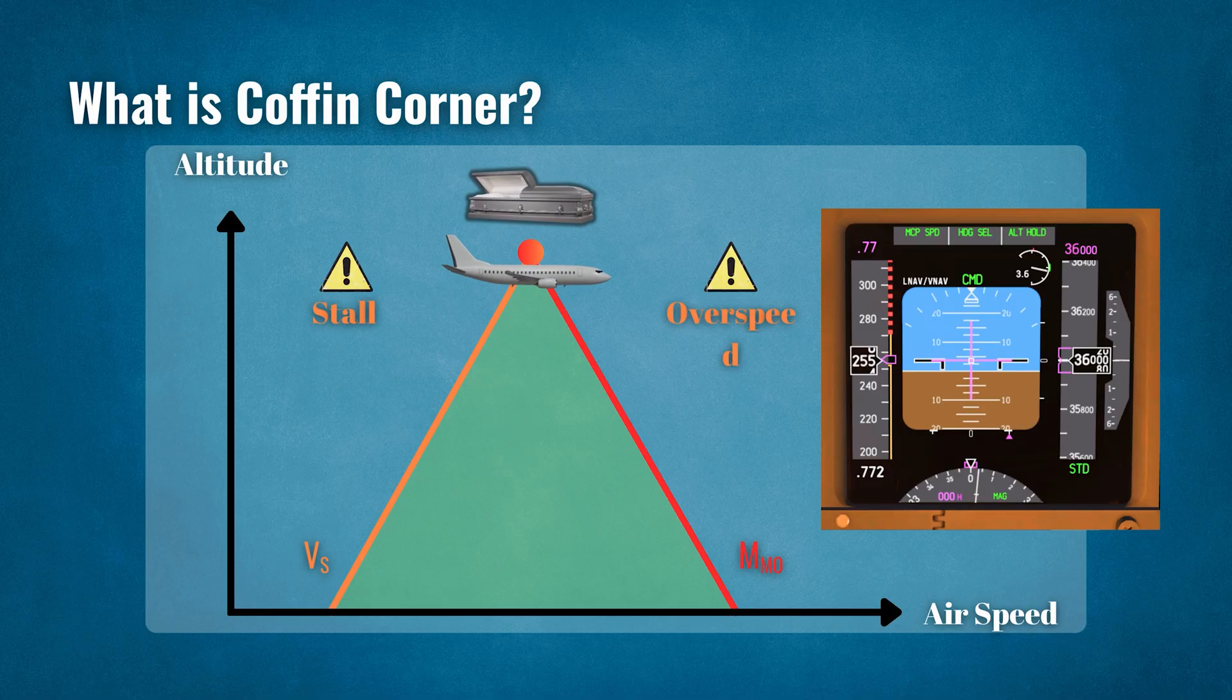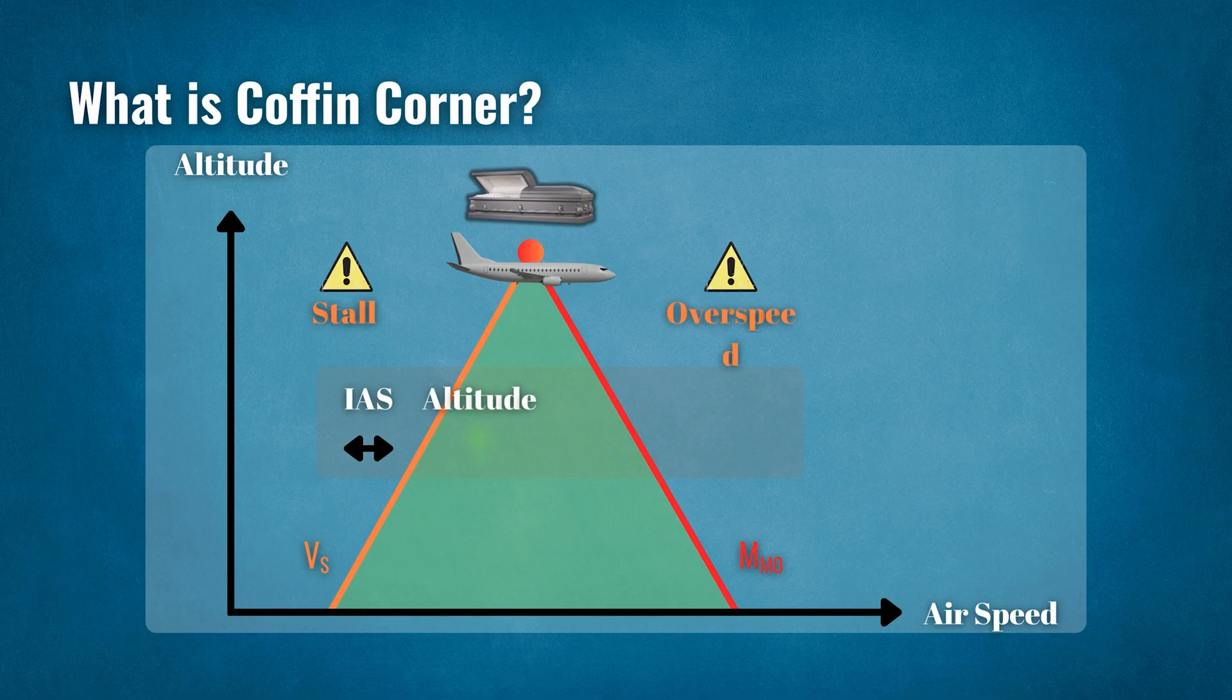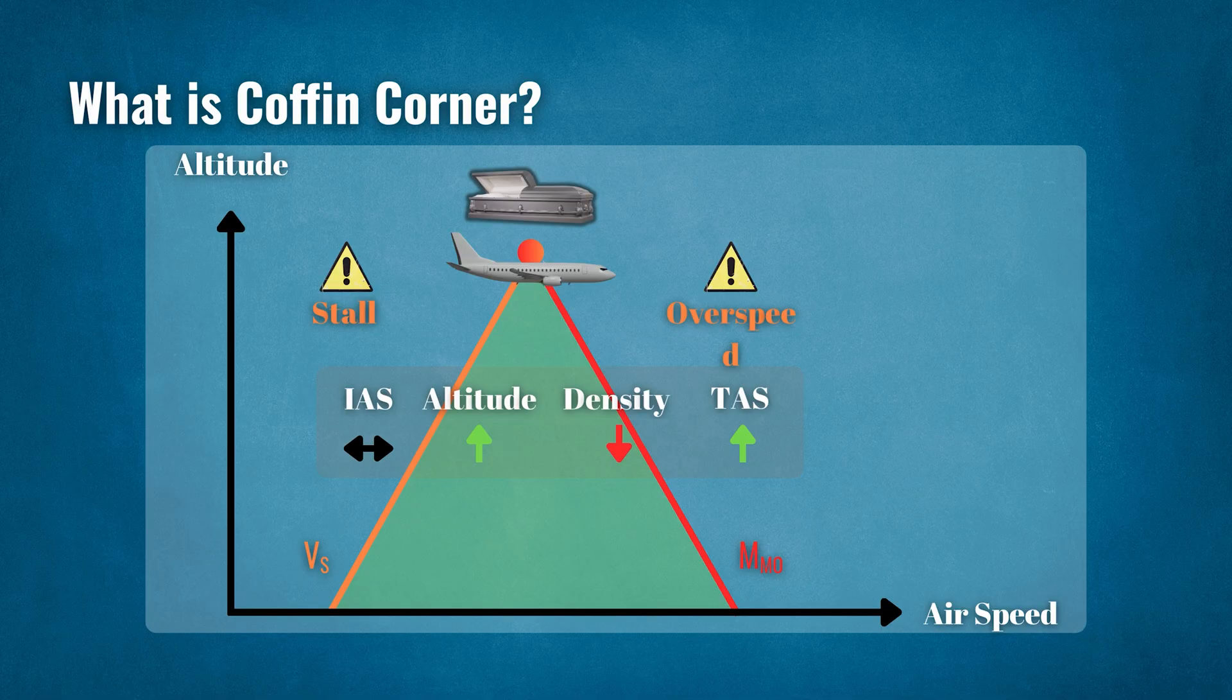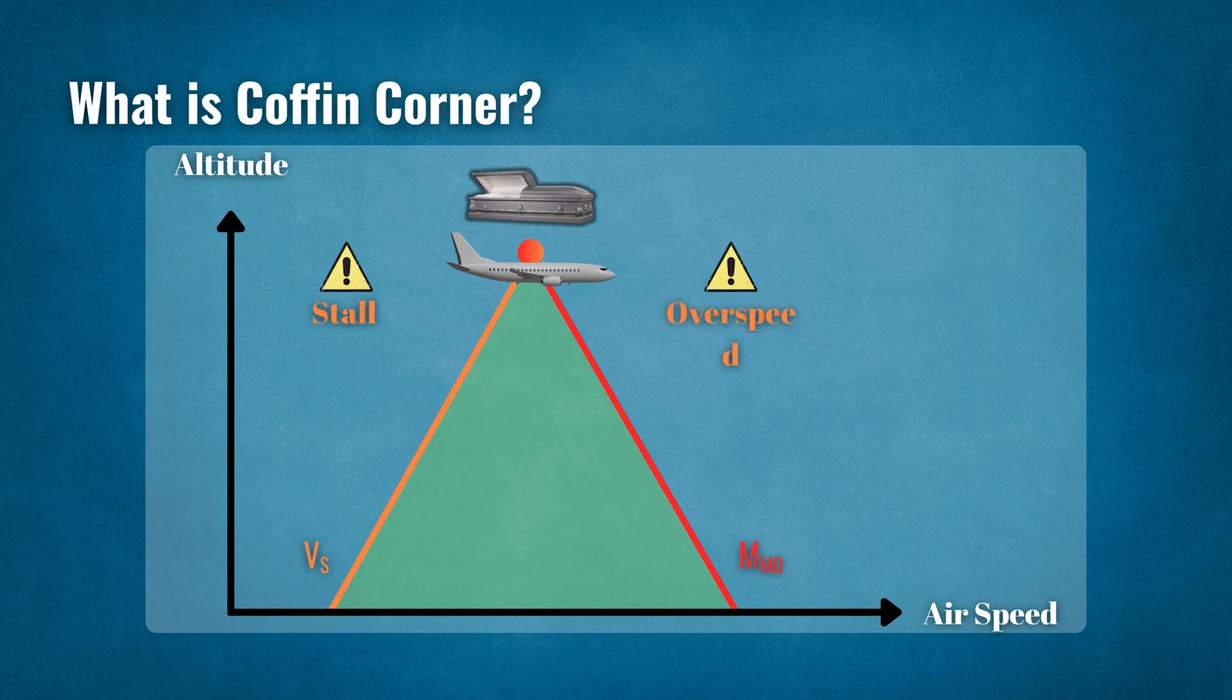Remember that while an aircraft will stall at a constant indicated airspeed, as altitude increases and air density decreases, the true airspeed will increase and the plane will have a higher true airspeed stall, or true stall speed. The plotted line of the Vs, or true stall speed, makes up the left side of our coffin corner graph.